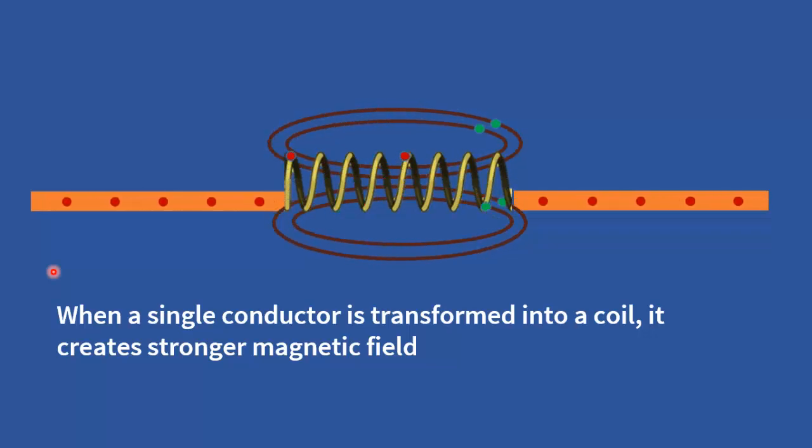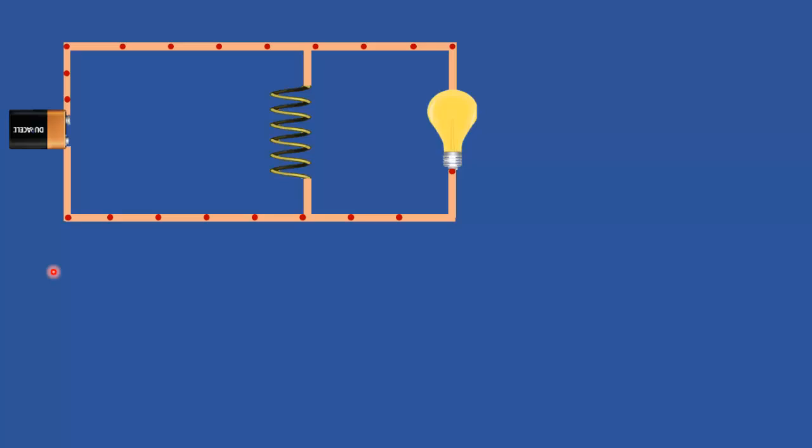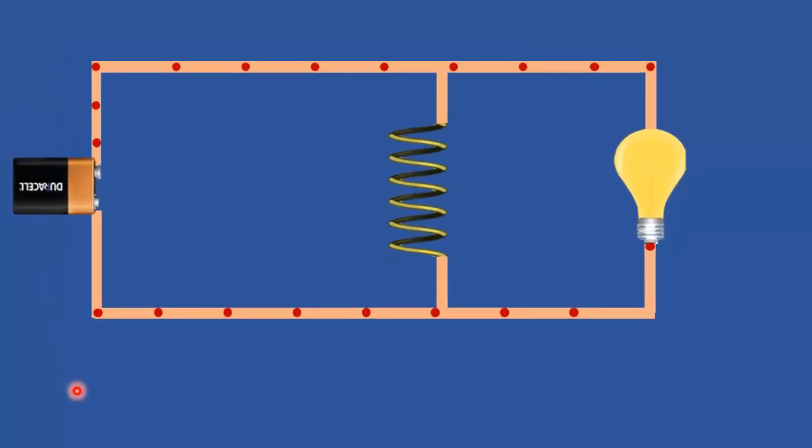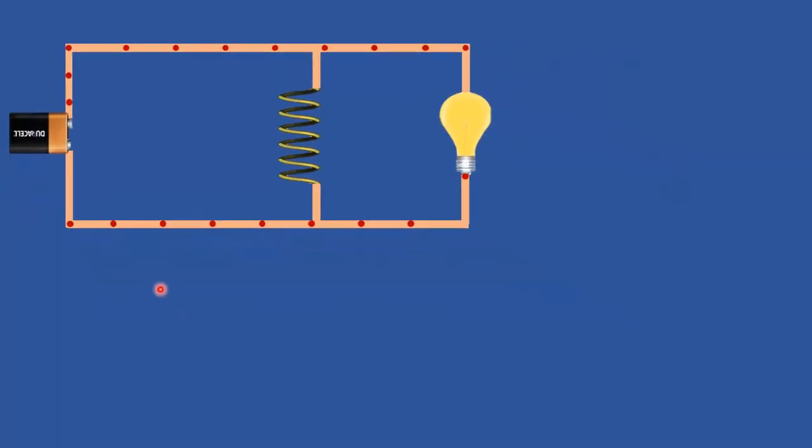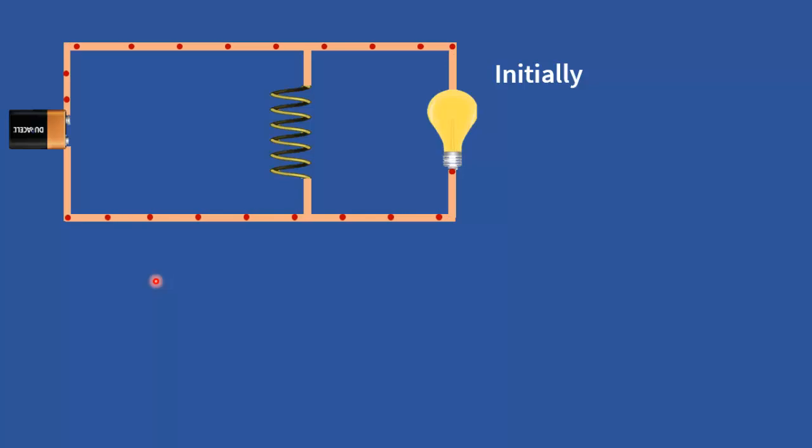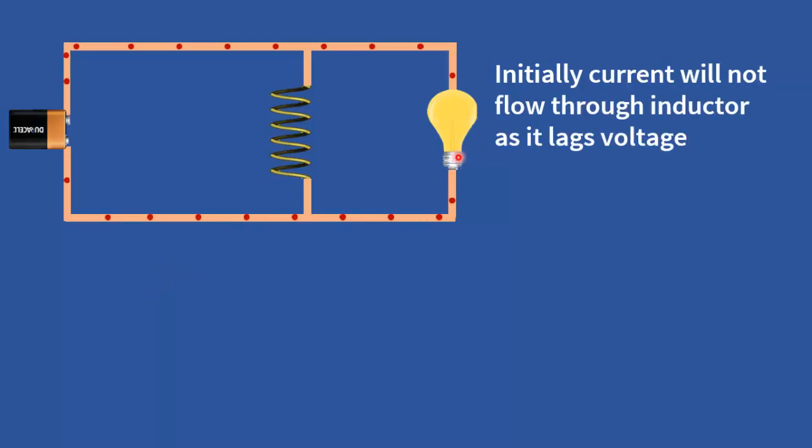Now let us see the behavior of inductor in an electric circuit. Here you can see, inductor and an LED bulb are connected in parallel to DC source. When the DC voltage is first applied, the LED bulb will turn on immediately, as it requires a certain forward voltage to operate.